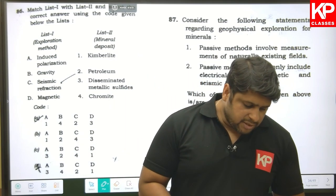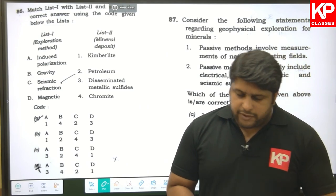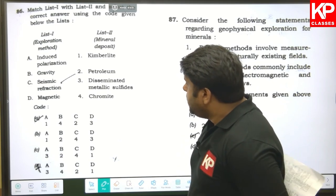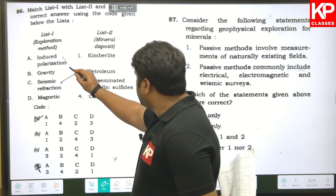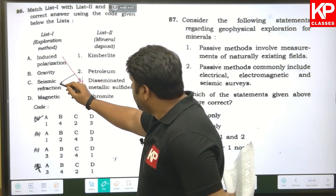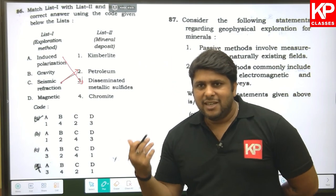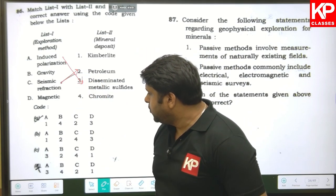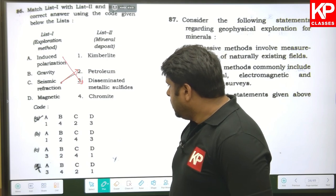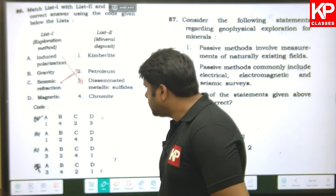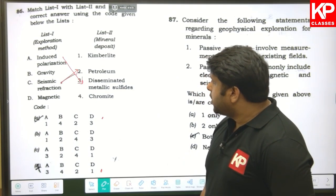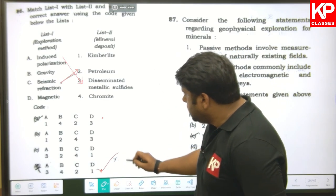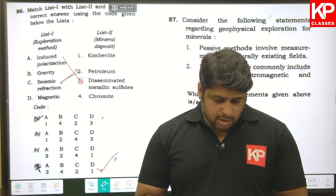Question eighty-six: match exploration methods with mineral deposit types. Induced polarization is used for disseminated metallic sulfides (A with three). Seismic refraction is used for petroleum exploration (C with two — everyone knows seismic is used for petroleum). Having matched two options, induced polarization with disseminated metallic sulfides as A-three, and seismic with petroleum as C-two, the remaining option D is the right answer.